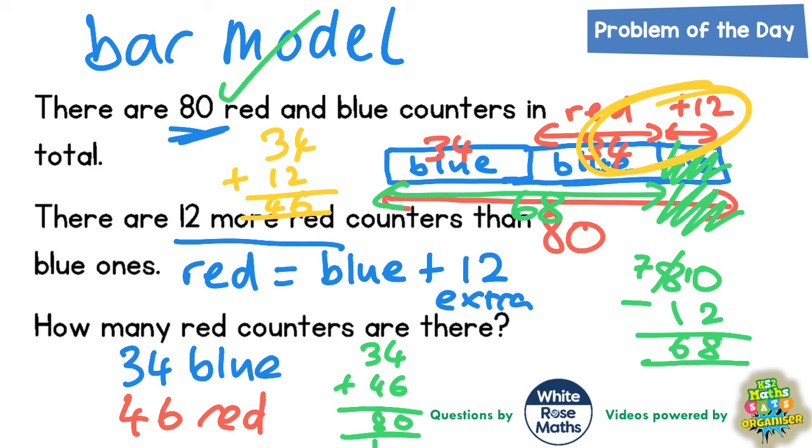And there are 12 more red counters than blue ones. Well is 46 twelve more than 34? All we'd have to do is add 12 onto 34 and see if we get 46. 4 plus 2 is 6, 3 plus 1 is 4, 46. So yes 46 is 12 more than 34. Therefore your final answer is 46 red counters.